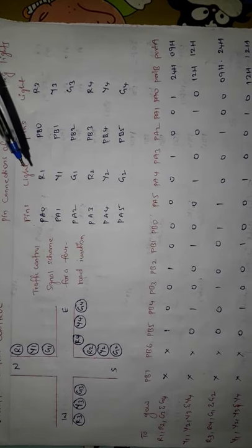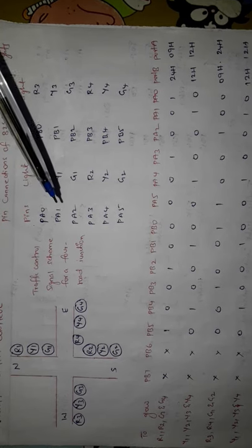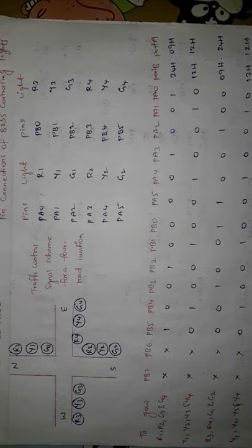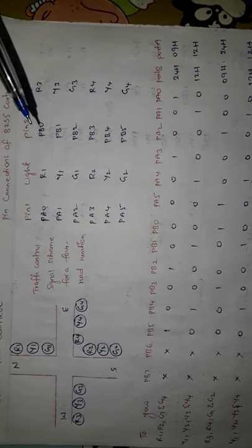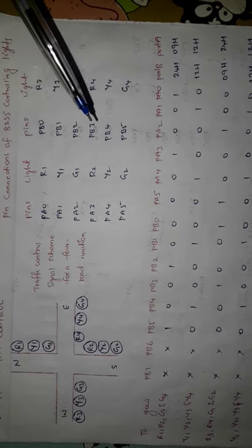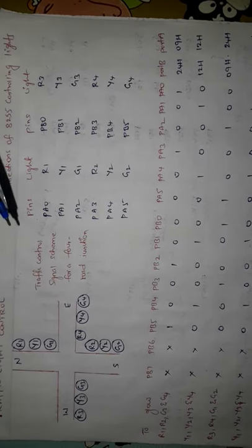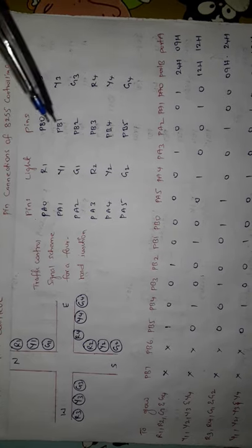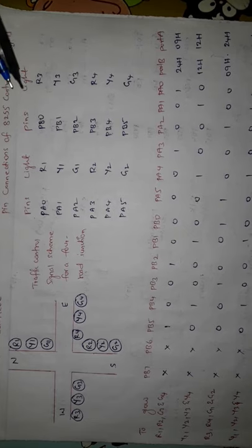The pins used to connect the LEDs of the 8255 are shown here. Traffic lights R1, Y1, G1, R2, Y2, G2 are connected to port A pins PA0 through PA5. These port A pins from 0 to 5 connect the traffic lights on the north and south sides. Port B pins PB0 through PB5 are used to connect the traffic lights on the west and east sides — that is R3, Y3, G3 and R4, Y4, G4.